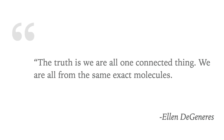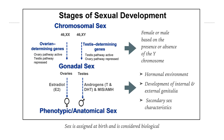Starting out with sex versus gender: the chromosomal sex, or more specifically the presence or absence of the Y chromosome, determines gonadal sex. Gonadal sex in turn determines the hormonal environment which directs the development of internal and external genitalia in the embryo and secondary sex characteristics during puberty. Sex is assigned at birth, usually by the birth attendant, and usually based solely on the appearance of the external genitalia.